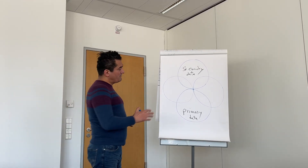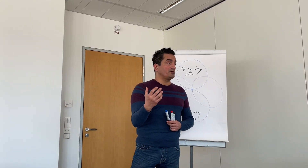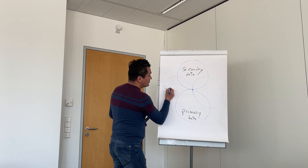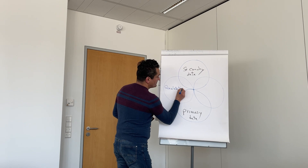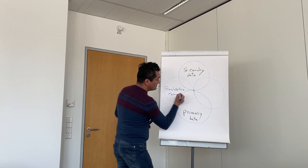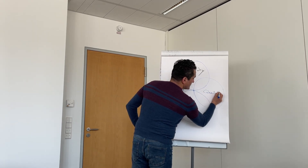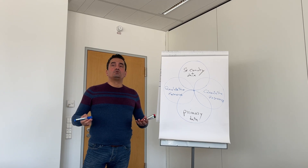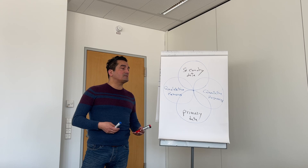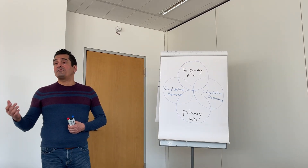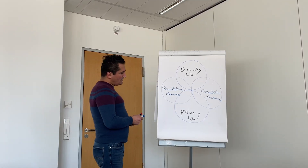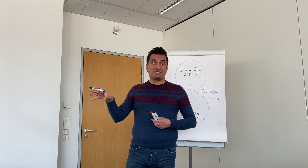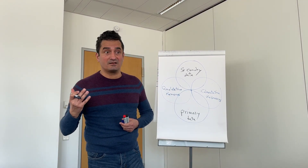Starting with primary data — when you want to do primary data, you need to visit the company or the case study you want to research. If you visit them, you have two different factors: qualitative resources and quantitative. Quality is about feeling — is it good, bad, very good? How do you get your satisfaction about something? Quantity means numbers — how often, how frequently, how much, how many. A visit to a company means observation. You see something, and that observation helps you feel the company, not just in theory but practically.